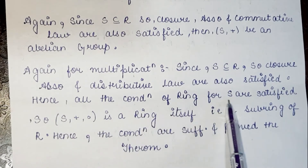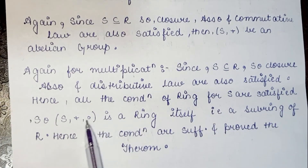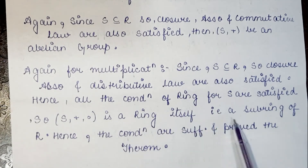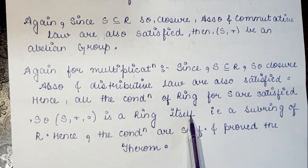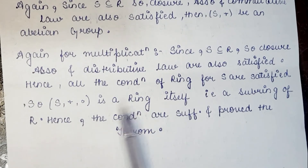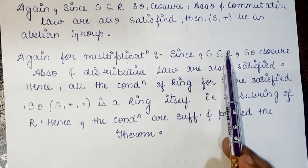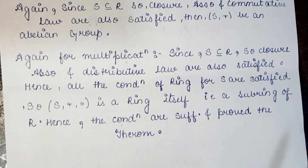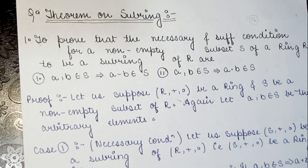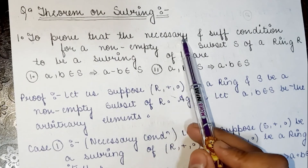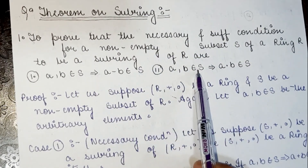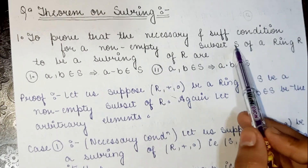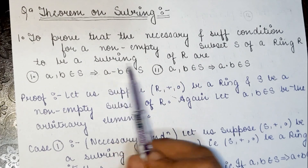All ring conditions for S under addition and multiplication are satisfied. Therefore S is a ring itself, and since S is a subset of R which is a ring, by definition S is a subring of R. Hence we have proved the sufficient condition and completed the theorem — both necessary and sufficient conditions are proved.